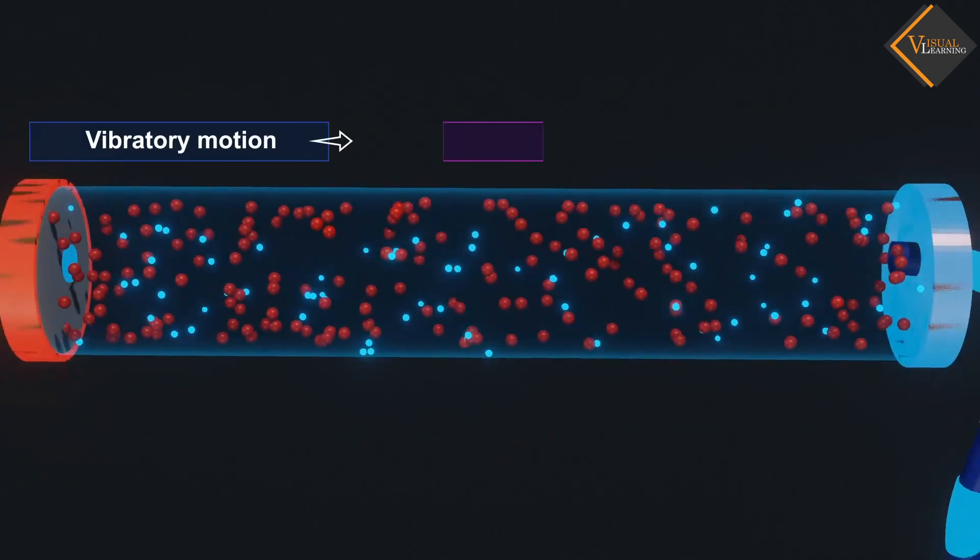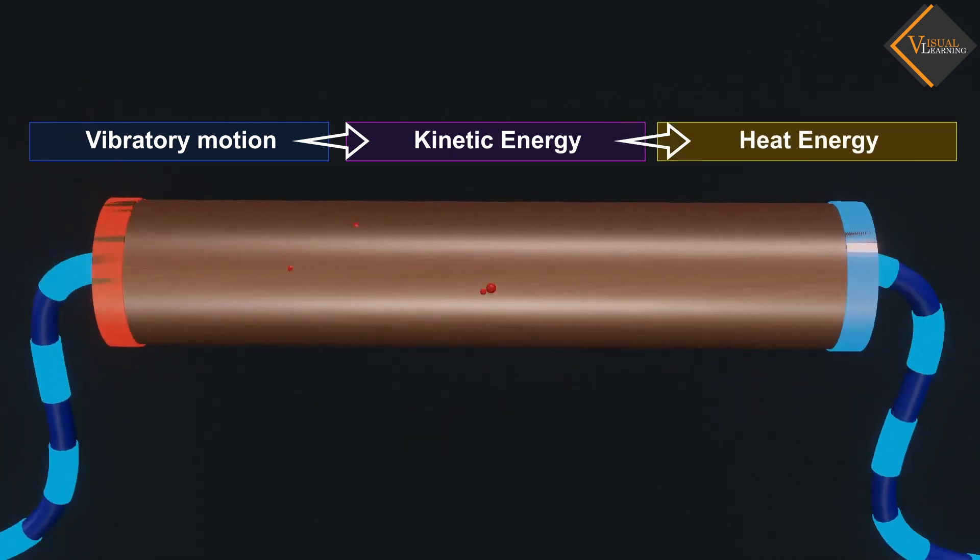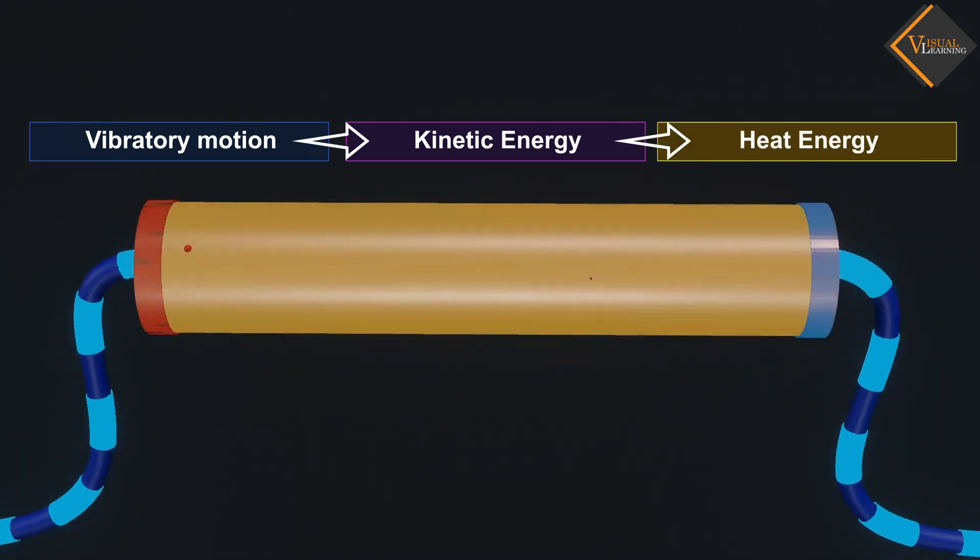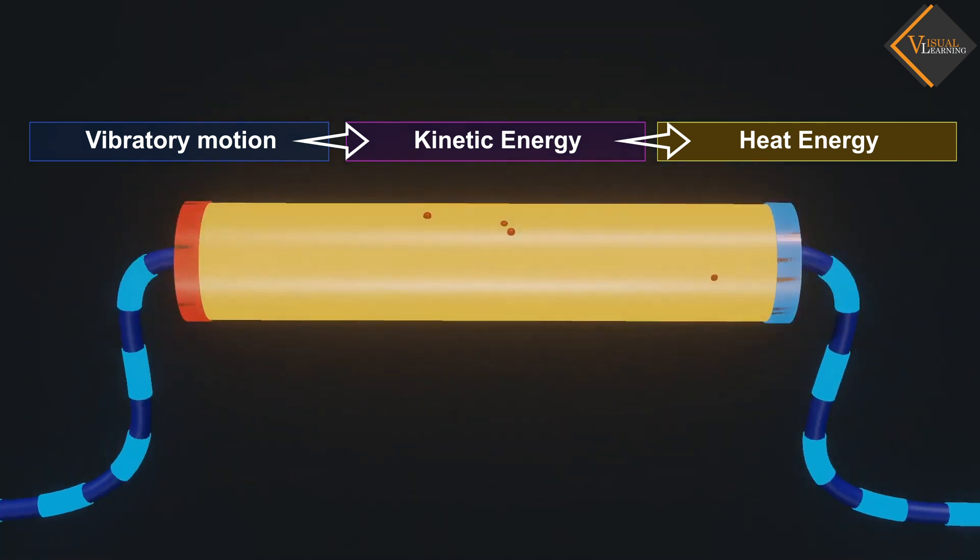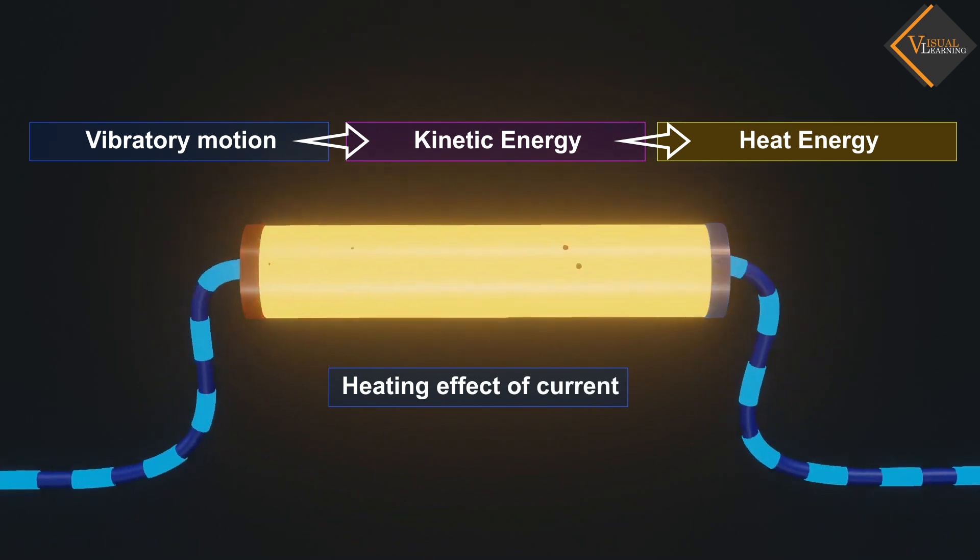This vibratory motion of atoms generates heat energy within the resistor. And hence, temperature of the resistor increases. This phenomenon is known as heating effect of current.